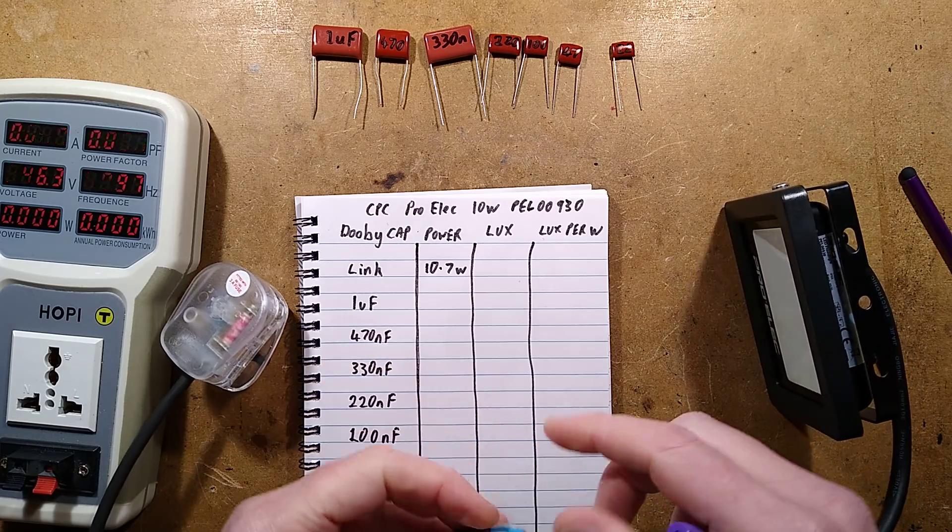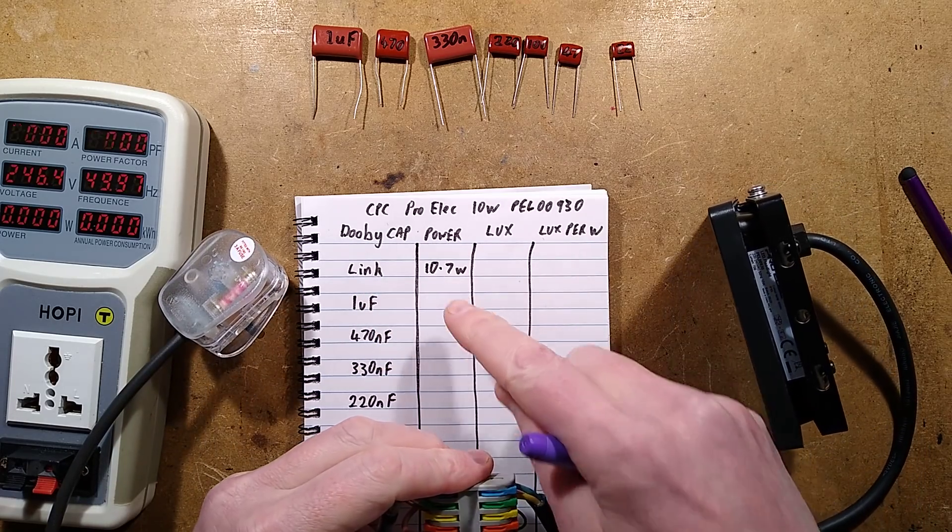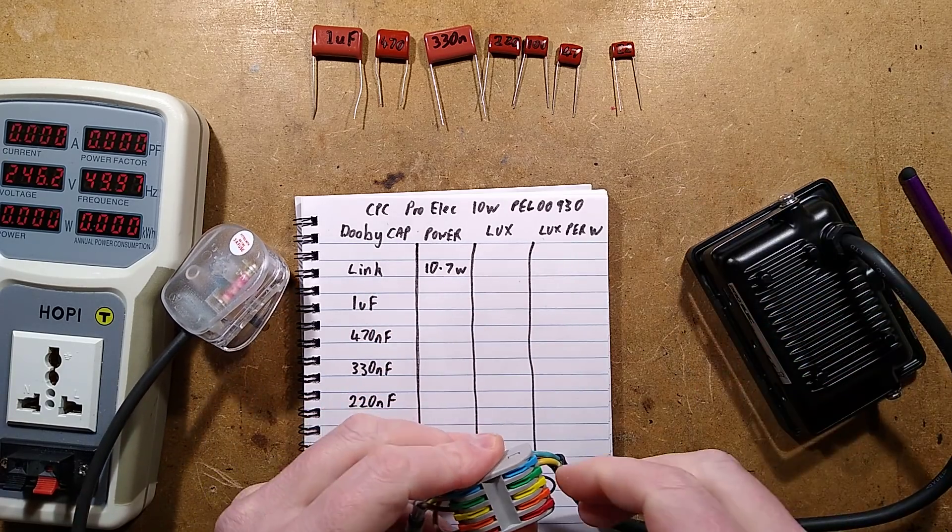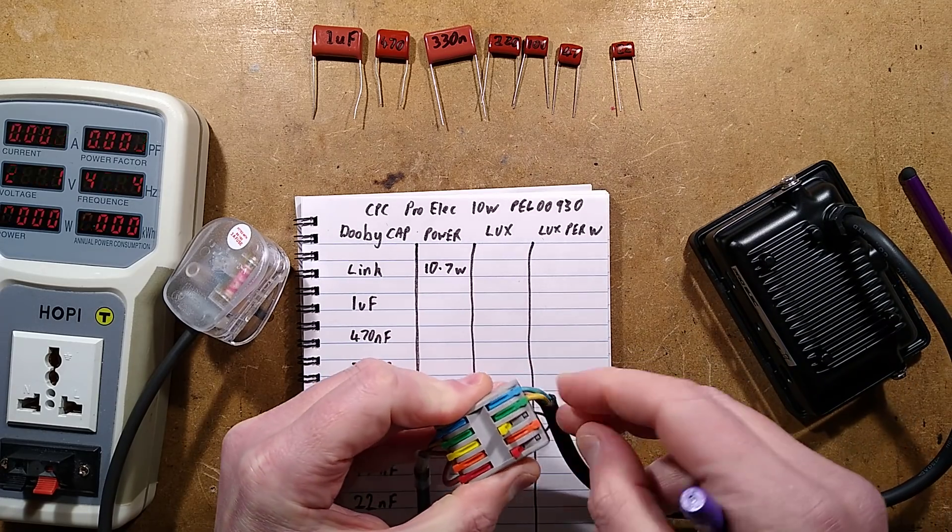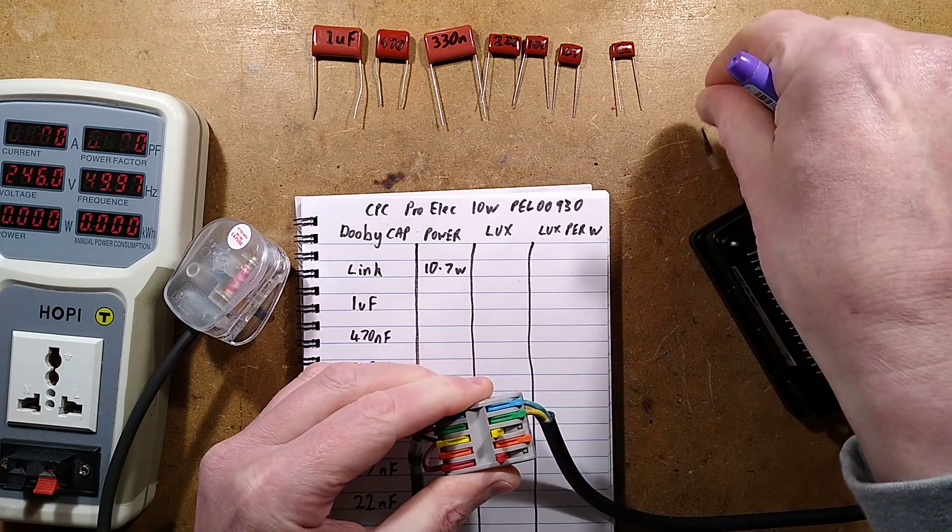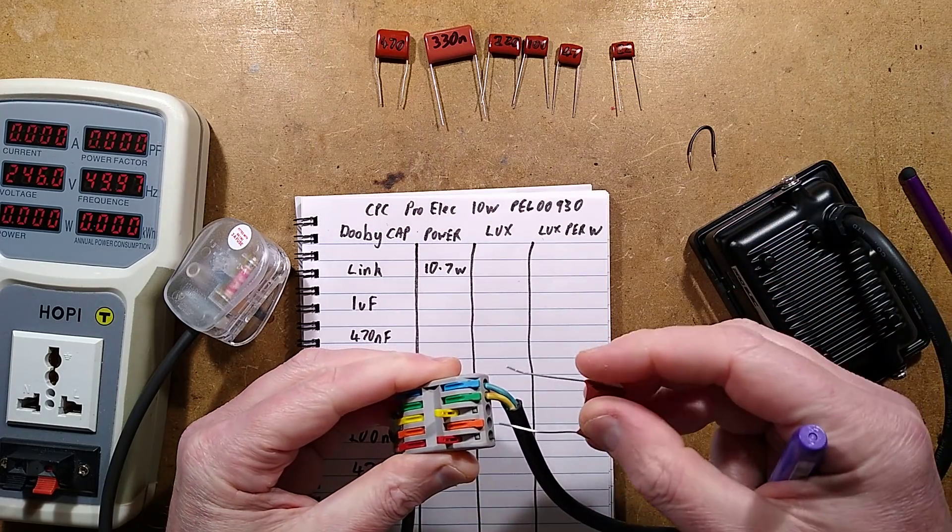Rightio, first test is complete. We've done it at the wire link. The base power is 10.7 watts. Let's pop these little tabs up so yellow and red go up. The link comes out. Let's put in a one microfarad capacitor.